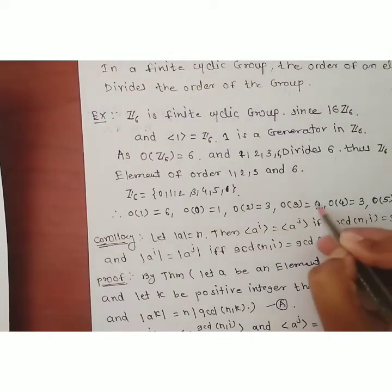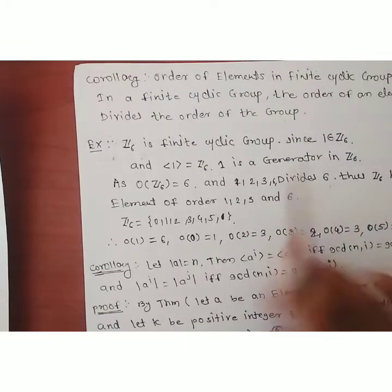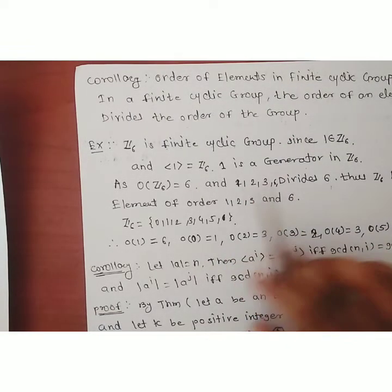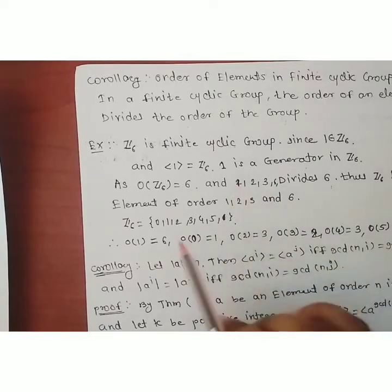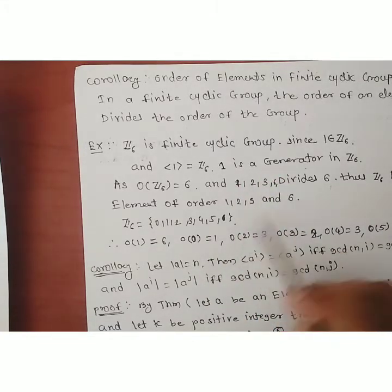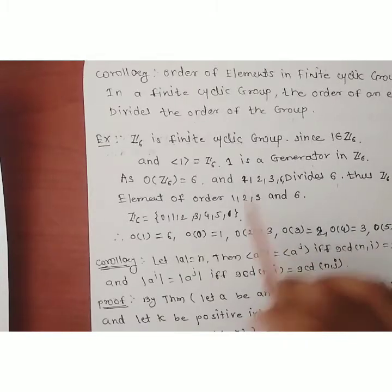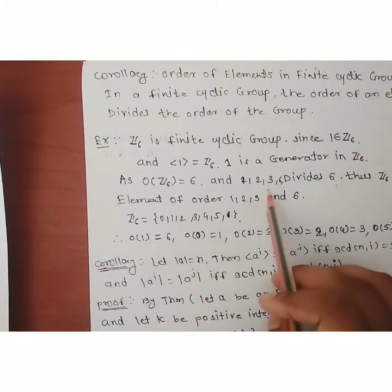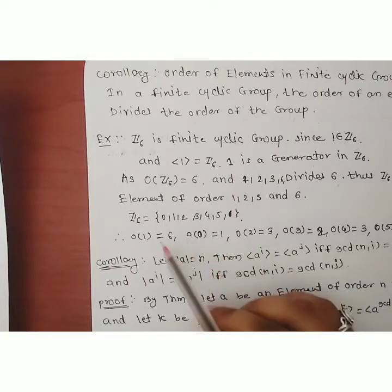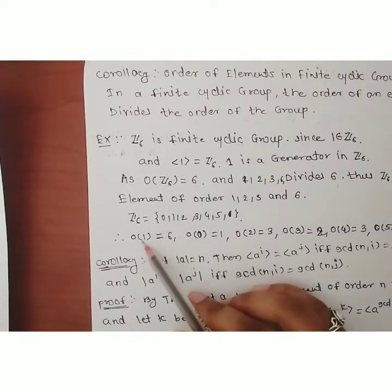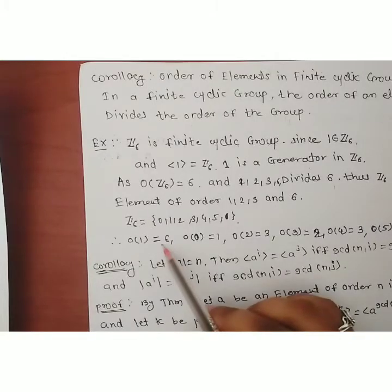We can verify: 6 divides 6, 1 divides 6, 2 divides 6, 3 divides 6 — this is how the corollary works. In an exam, to find orders of elements of a cyclic group: first find the order of the group, then find the divisors of that order — those are the possible orders of its elements. Then find the order of each element individually.